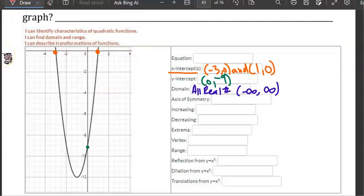Axis of symmetry is the line that goes through the vertex, and it goes through x equals negative 1.